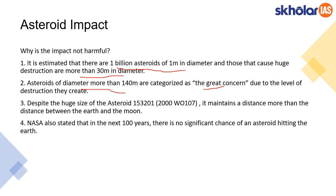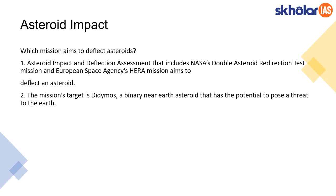Even this particular asteroid — asteroid 153201 — despite its huge size, is not considered a concern because the distance between earth and this asteroid is more than the distance between earth and the moon. Scientists believe it won't bring any destruction to earth, and NASA has estimated that for the next 100 years there would not be any significant chance of an asteroid bringing destruction to earth.